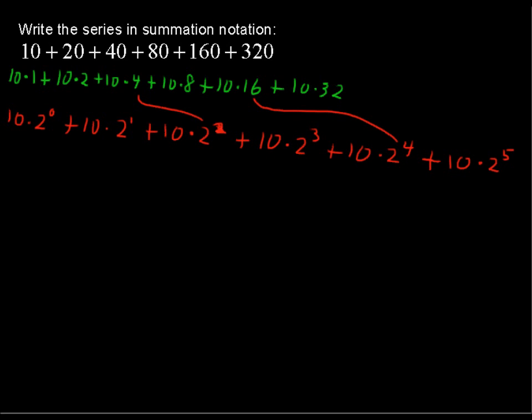So let's take a stab at the summation notation. We're going to say the sum of, that's the sigma, the sum of 10 times 2 to the n, but we've got a 0 there. Typically we start when n equals 1, so we'll say 2 to the n minus 1, so that when n is 1, we're starting at 2 to the 0 power.